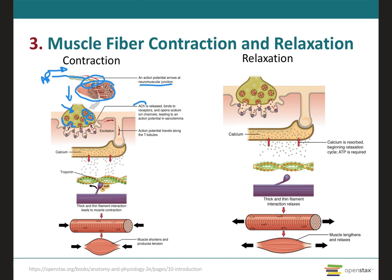These neurotransmitters are specifically acetylcholine for muscle contraction, and they bind on the membrane of the muscle — called the motor end plate — to specific receptors of acetylcholine. This binding triggers sodium to enter into the muscle, causing depolarization of this membrane and exciting it. The excitement of this membrane causes an action potential to travel along the invaginations of the muscle membrane, called T-tubules, and this causes the release of calcium into the sarcoplasm.